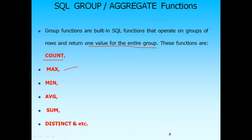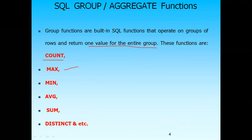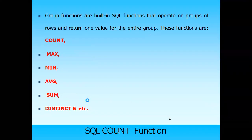Some functions available in SQL include COUNT, MAX, MIN, AVG, and SUM. The COUNT function retrieves the count of a set of values, MAX returns the maximum value, MIN returns the minimum, AVG the average, and SUM the total. These aggregate functions are also called group functions.